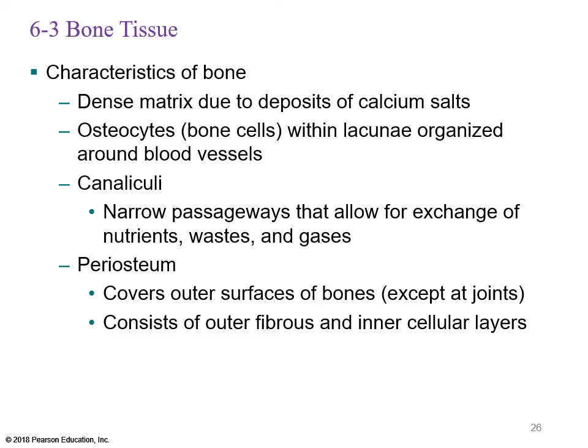The periosteum covers the outer surface of bone except at the joint. It consists of an outer fibrous membrane and an inner cellular or osteogenic layer. The osteogenic layer is responsible for bone growth. When muscles attach to bones via tendons, those tendons insert through the periosteum into the bone and pass through the osteogenic layer. When you lift weight and gravity pulls on the tendon at its insertion site, it stimulates the osteogenic layer to produce more bone.